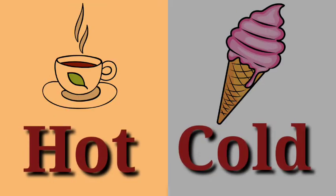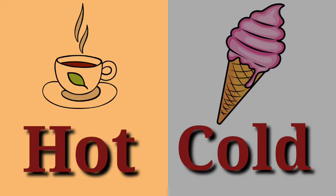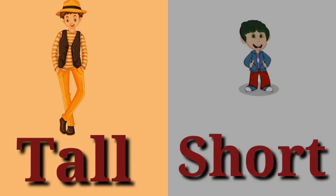Next, our word: hot and cold. Hot and cold. So friends, you can see tea — hot. So you can say hot. And ice cream is cold. So you can say hot and cold.